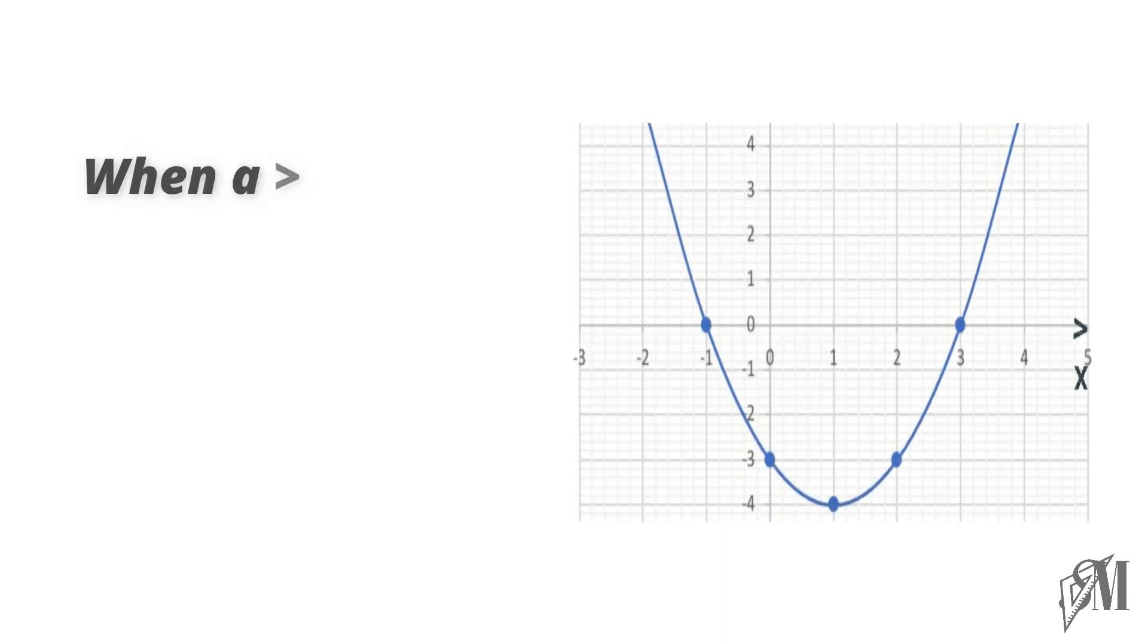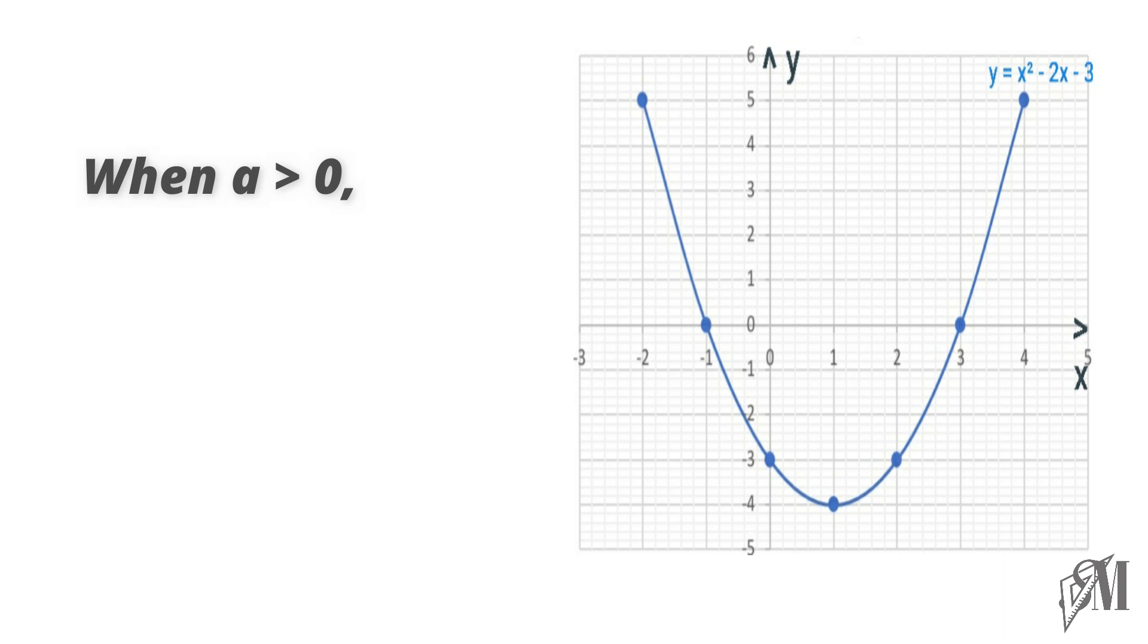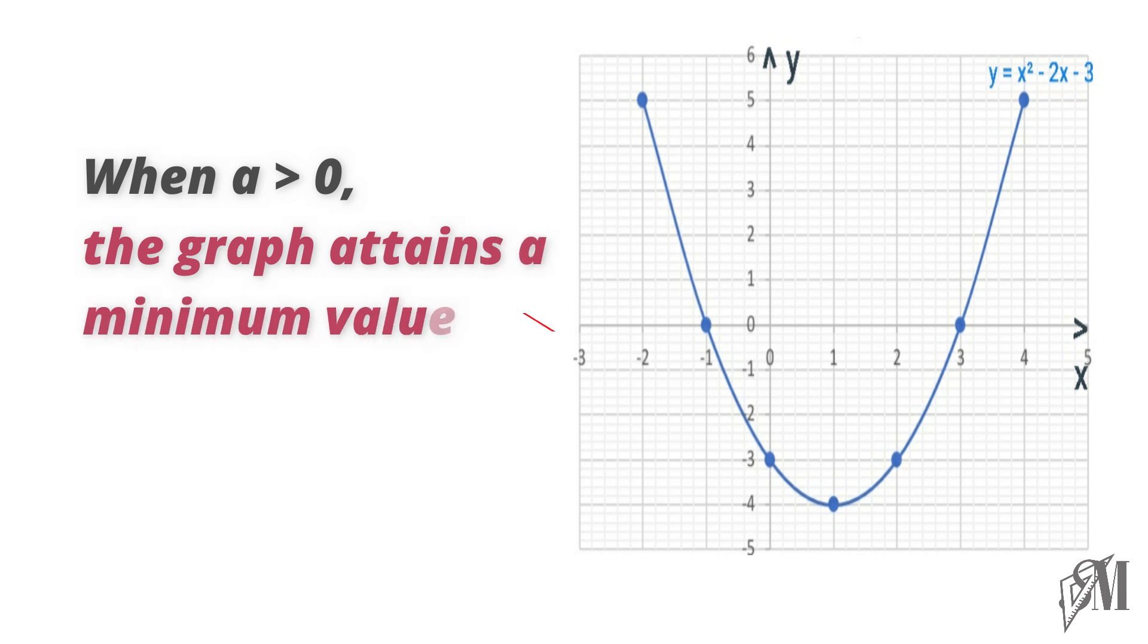So it is clear when a is greater than 0 in the graph of the form y equals ax squared plus bx plus c, we obtain a parabola with a minimum. Now let's see what happens when a is less than 0. Take the function y equals minus x squared minus 2x plus 6 in the range of x between minus 4 and 2.